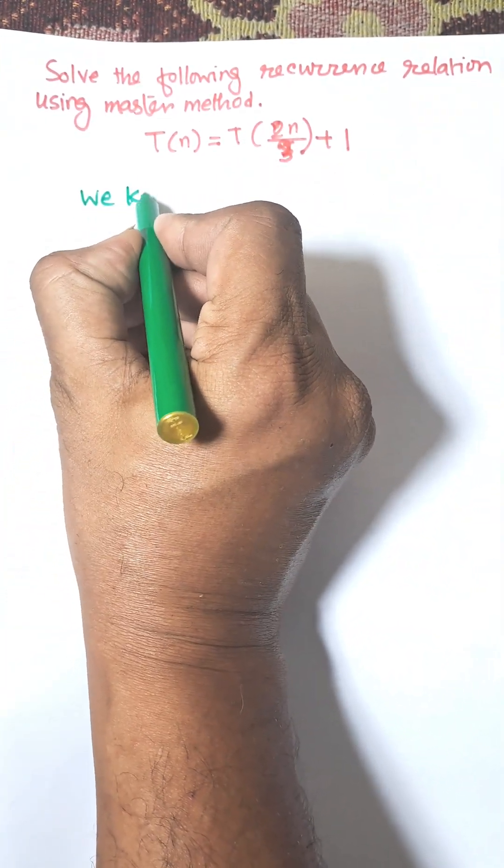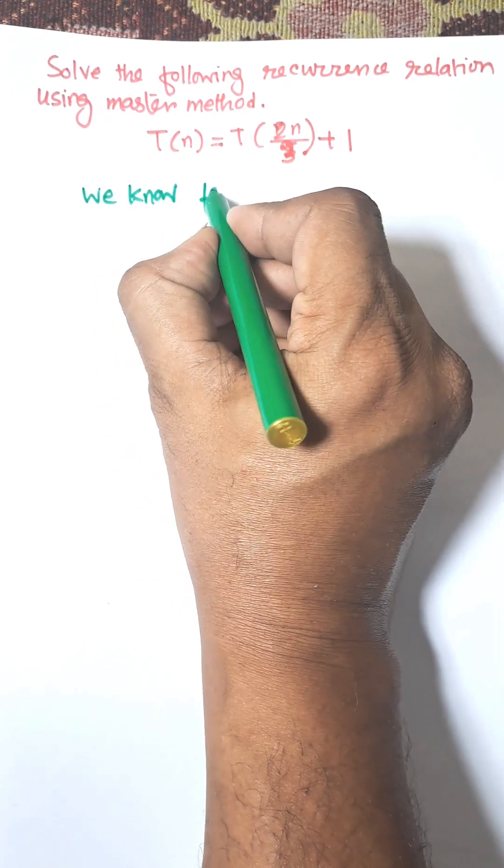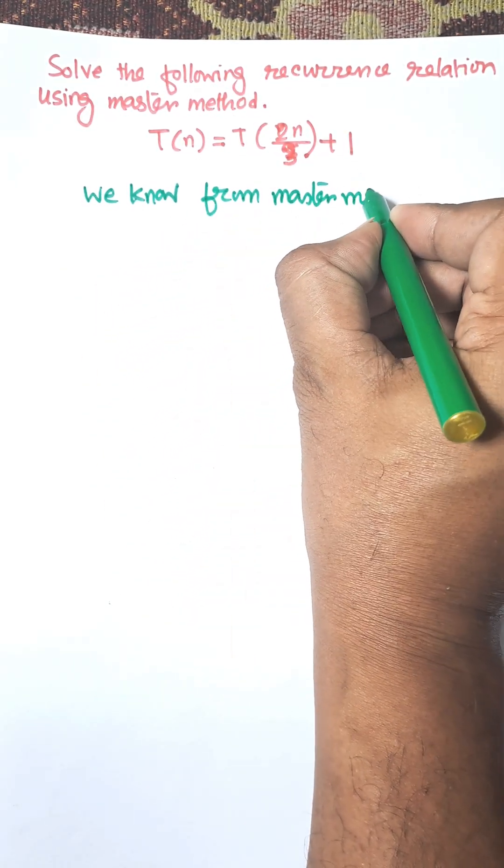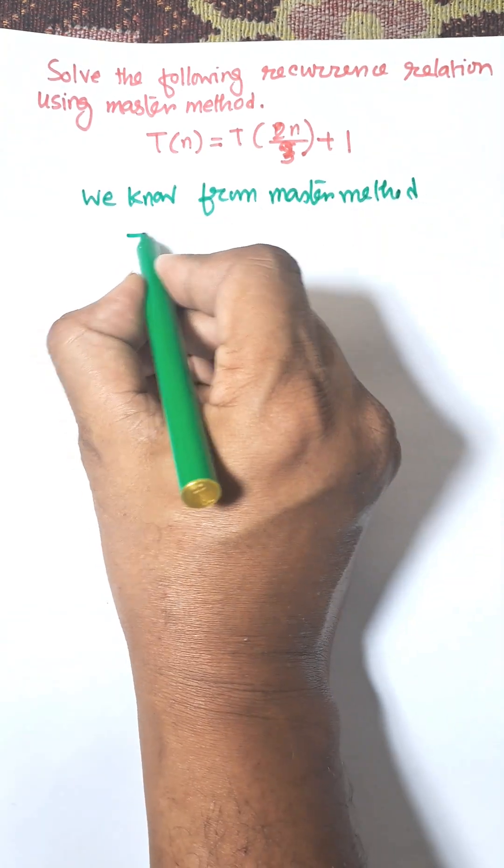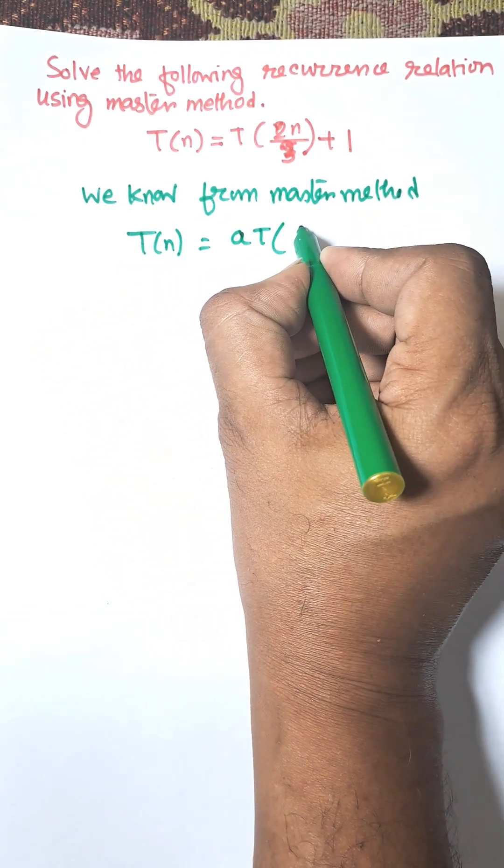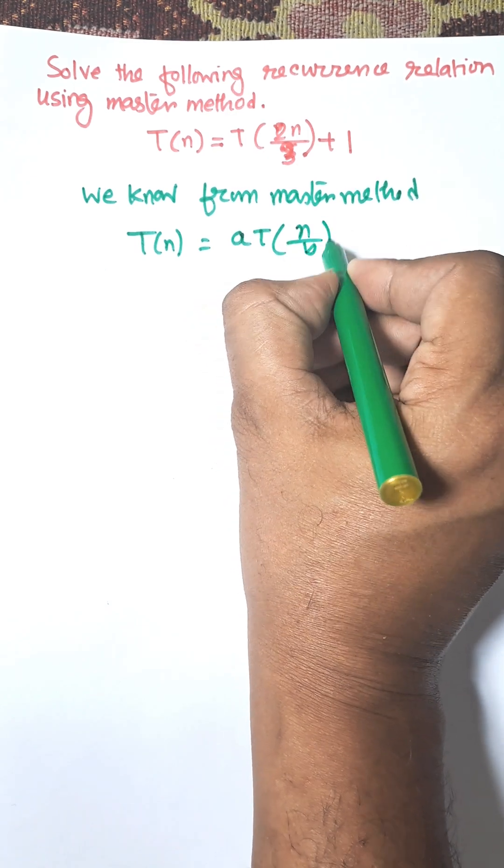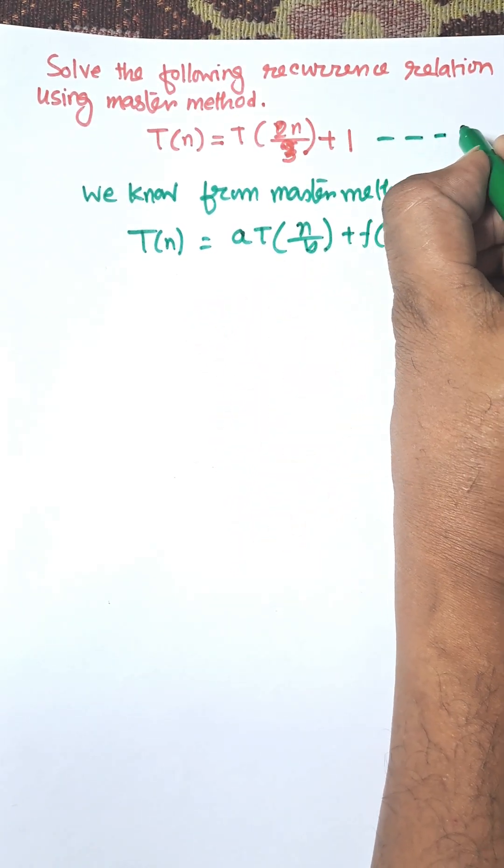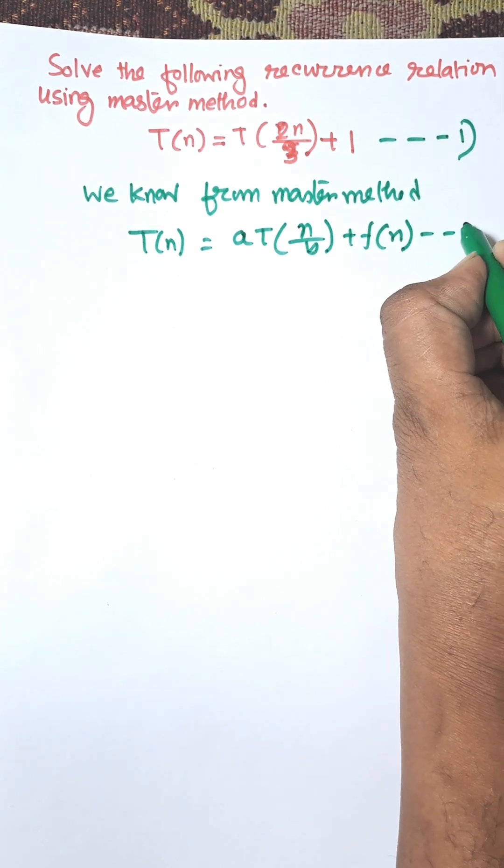We know from master method T(n) = a·T(n/b) + f(n). So this is equation number 1 and this is equation number 2.